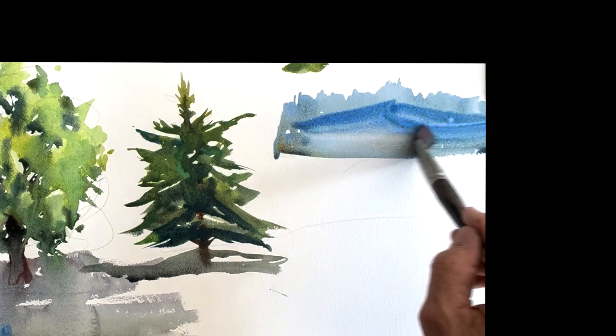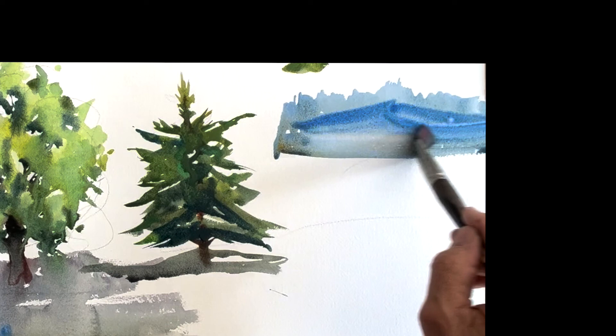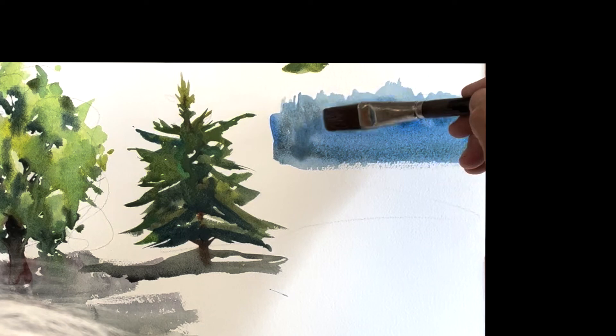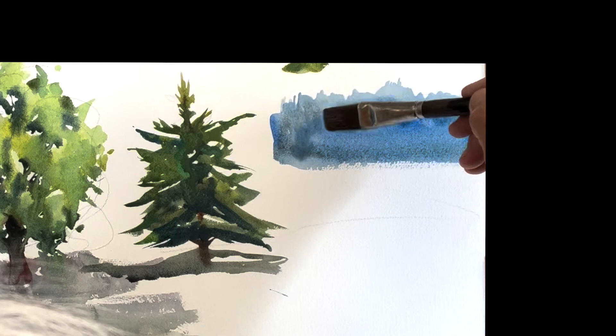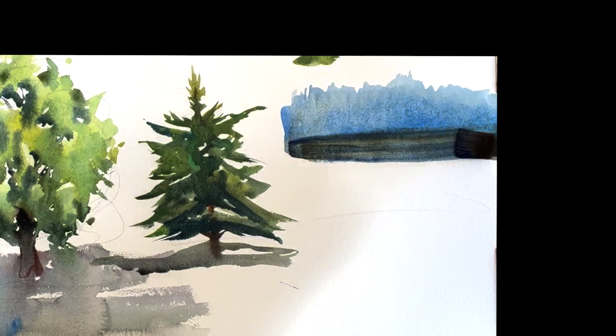I'm just using cobalt blue there. So you get that cool light effect. Okay. And then I'm putting another row in front. It's much darker. I added a lot of ultramarine to that and a touch of quinacridone sienna.